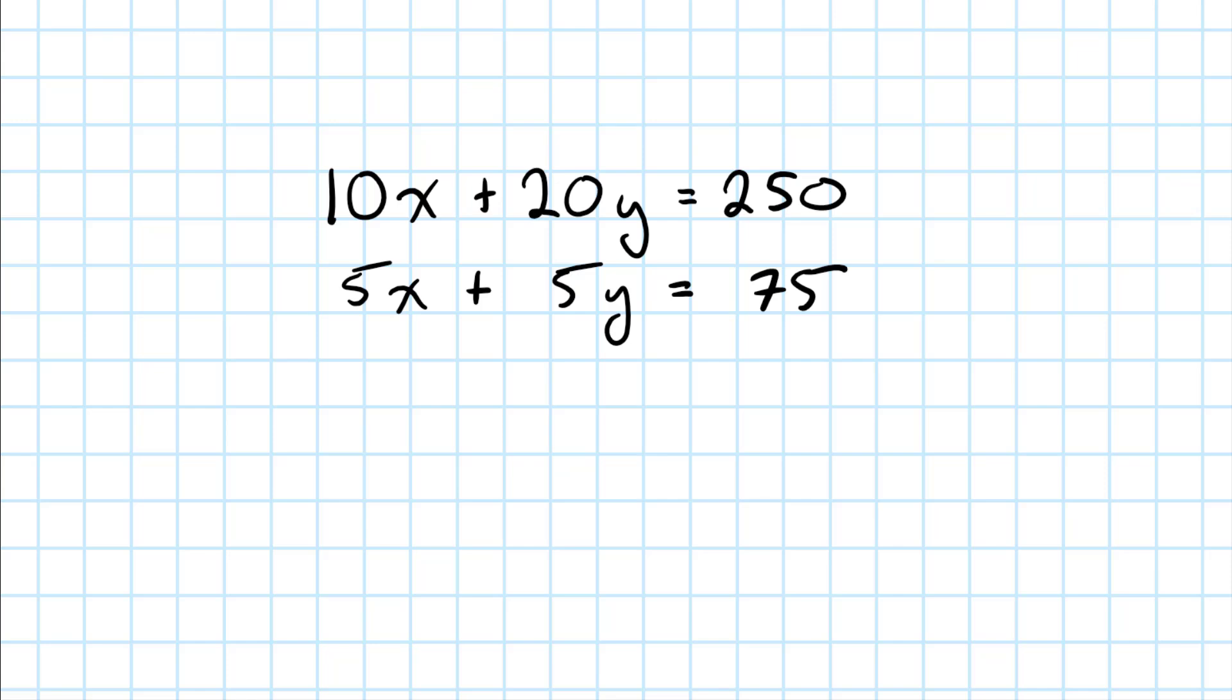Now, this can come up in your MA exam and it can come up in your PM exam. For example, you might need to solve for a variable cost and a fixed cost in a complicated high-low type of question. That could be in MA or PM. In PM, you might need to solve for X and Y in the context of constraints in a production plan.